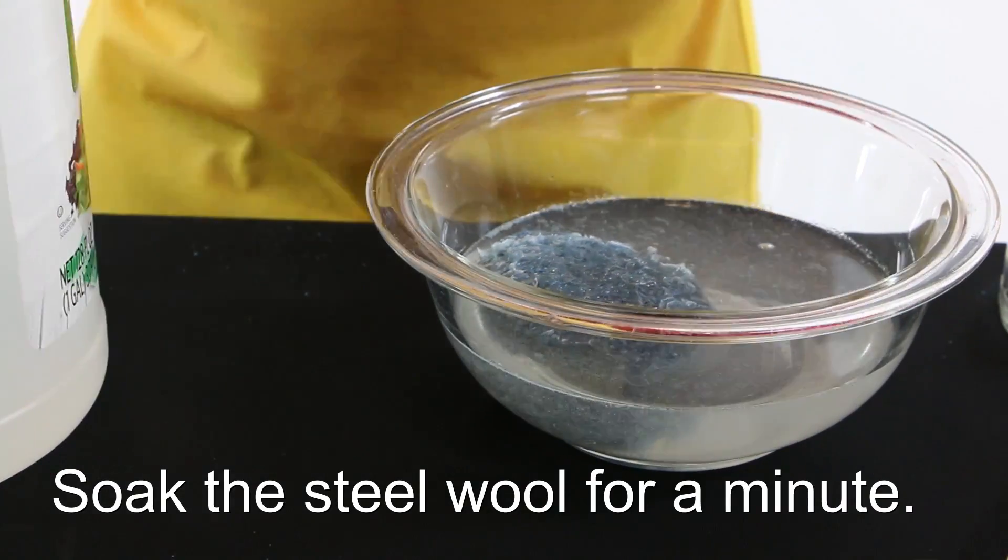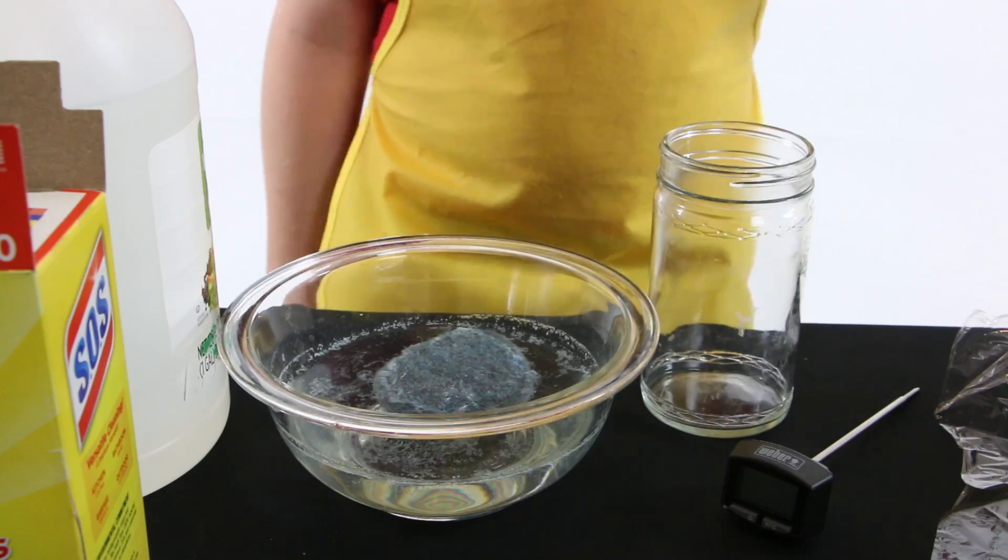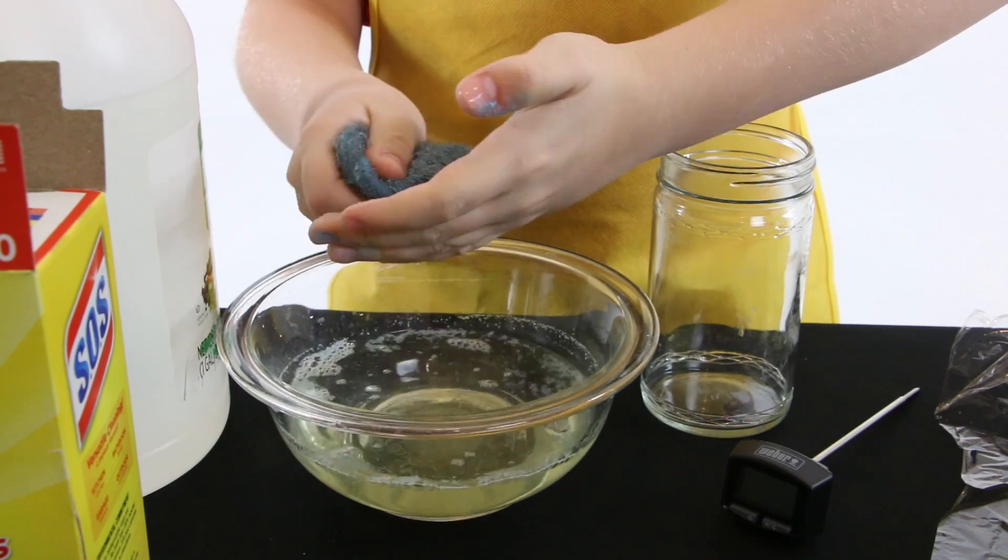Allow the steel wool to soak for about a minute. Take the steel wool out and squeeze out any extra vinegar.